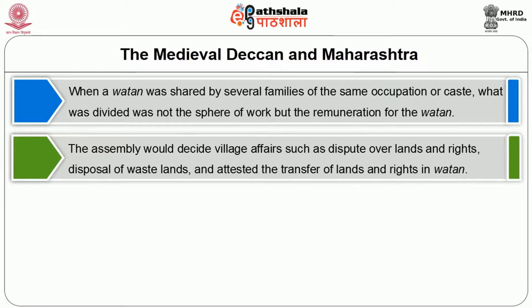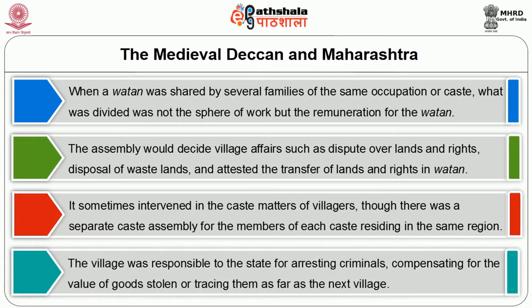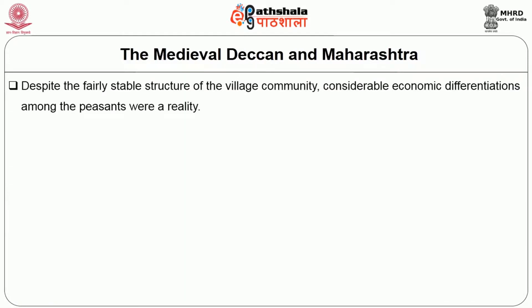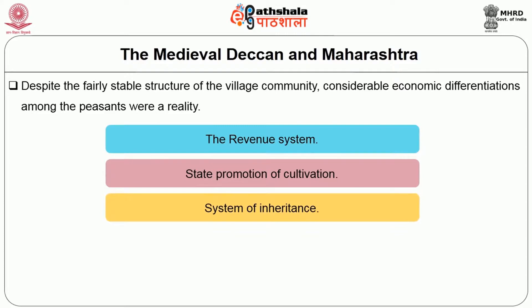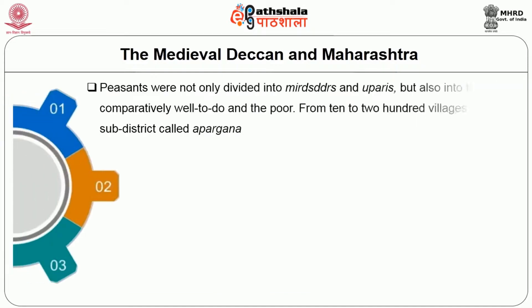The village assembly decided village affairs such as disputes over land rights, disposal of wastelands, and attested transfers of land and land rights in vatan. It sometimes intervened in caste matters, though there was a separate caste assembly for each caste residing in the village region. The village was also responsible to the state for arresting criminals and compensating for the value of goods stolen or tracing them to the next village. Despite the fairly stable structure of the village community, considerable economic differentiation among peasants was a reality, arising from the revenue system, state promotion of cultivation, system of inheritance, individual availability of capital and labour, and natural as well as man-made calamities.